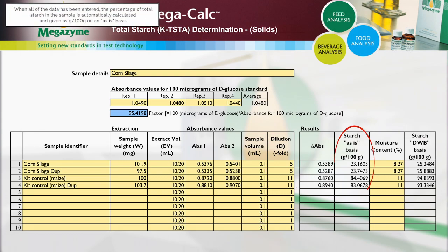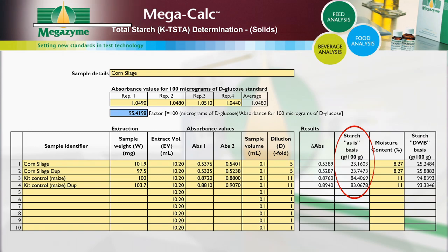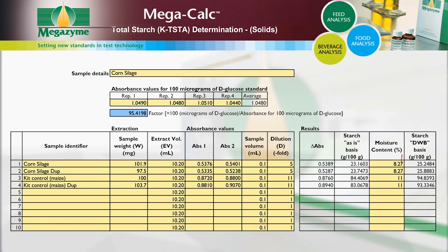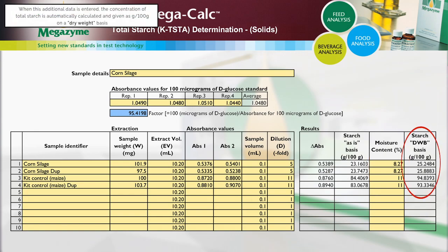When all of the data has been entered, the percentage of total starch in the sample is automatically calculated and given as grams per 100 gram on an as-is basis. If the moisture content of the sample is known, input the moisture content percentage. When this additional data is entered, the concentration of total starch is automatically calculated and given as grams per 100 gram on a dry weight basis.